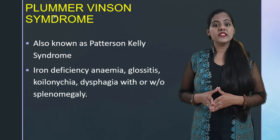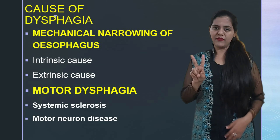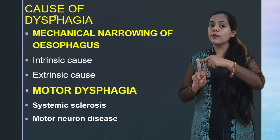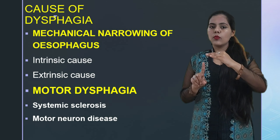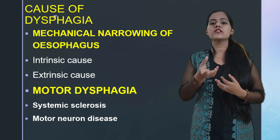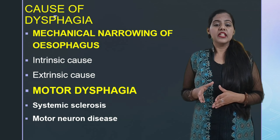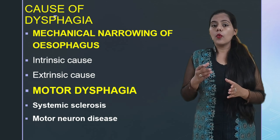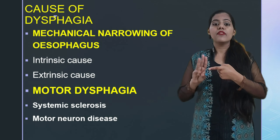Now the causes of dysphagia. The first cause is mechanical narrowing of the oesophagus, which has two main factors: intrinsic and extrinsic. Intrinsic causes mean some cause within the oesophagus itself leading to dysphagia. Intrinsic factors include congenital atresia of the oesophagus — that means practically absence of the oesophagus — along with inflammatory conditions such as stomatitis, glossitis, and pharyngitis.